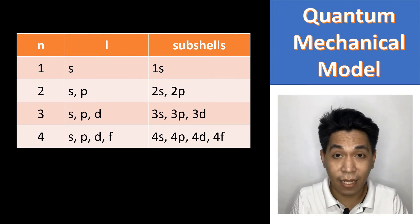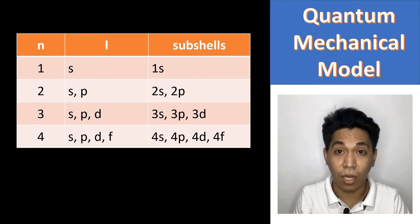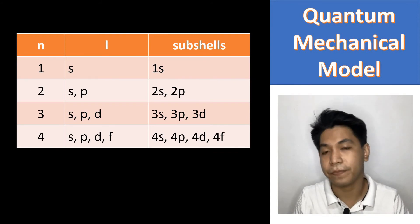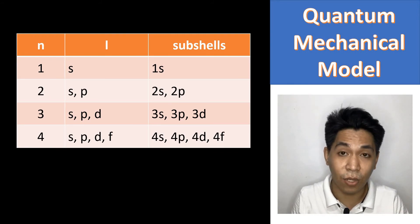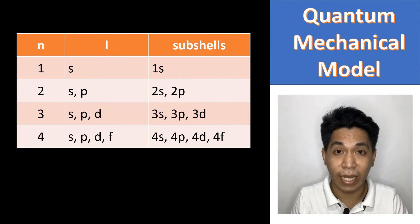If n is equal to 2, then there are two possible orbital shapes, which are the S and the P. And if n is equal to 3, then we can have S, P, and D orbitals.